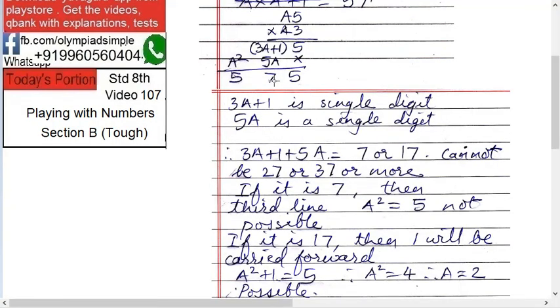Now 3A plus 1 plus 5A equals to either 7 or 17, we don't know. So let's try. It cannot be 27, why 27 or 37? Why it cannot be? Because any number when added, you try and add any number, 9 plus 9, what are the two maximum numbers? 9 plus 9, so they can be 18. It can't be more than 18. So that's why this cannot be more than 17, this can't be 27 or 37.